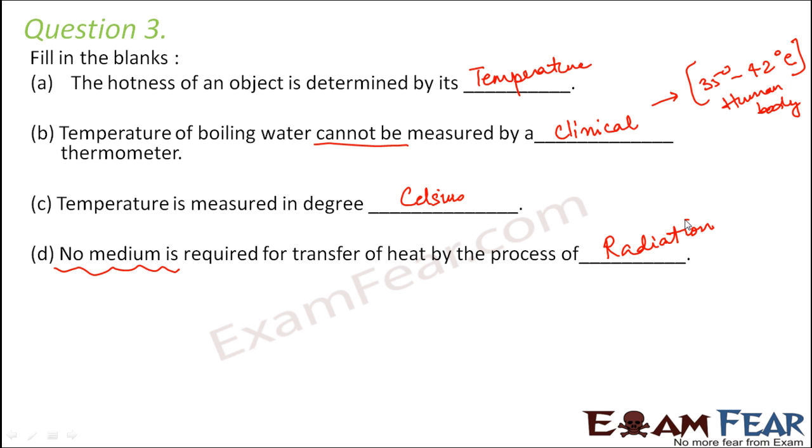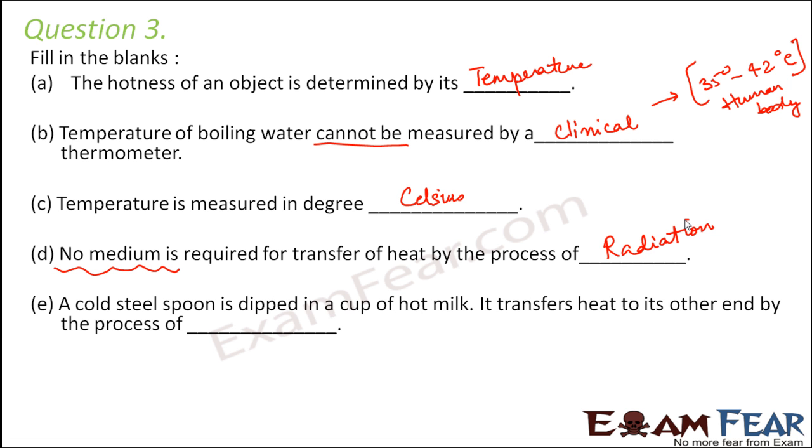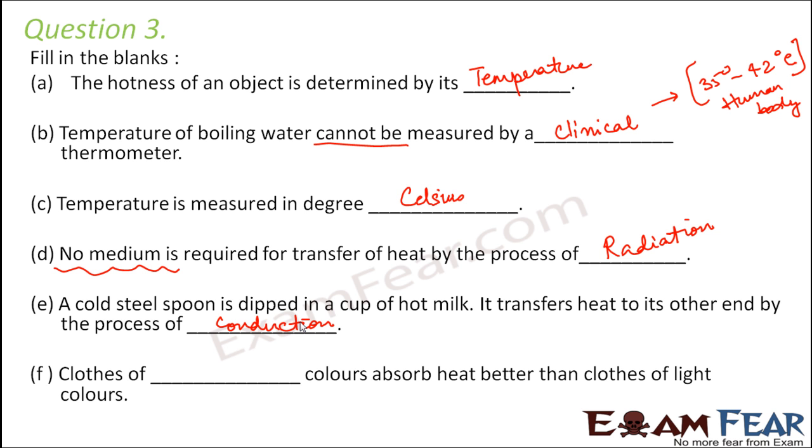A cold steel spoon is dipped in a cup of hot milk, it transfers heat to its other end by the process of—the same object, heat is being transferred from one end to another. So in solids how does heat transfer take place? By conduction.